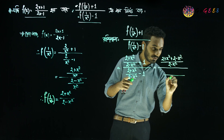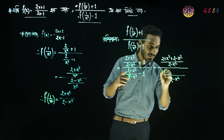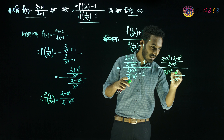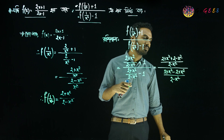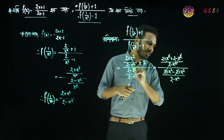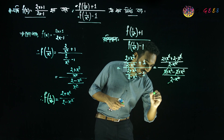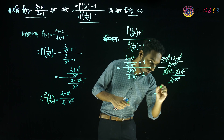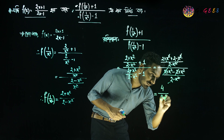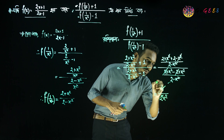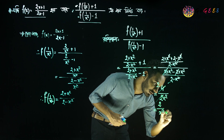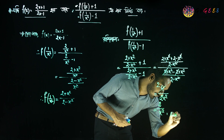The denominator becomes 2 minus x square. On top one side we have 2 plus x square, and minus multiplied by 1 into 2 minus x square. After multiplication we get minus 2 plus x square. So the x square and x square cancel. On top we are left with 2 plus 2 which is 4, and on the bottom x square plus x square is 2x square. Dividing 4 by 2x square gives us 2 by x square, which is our final answer.